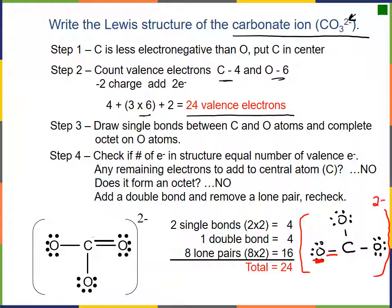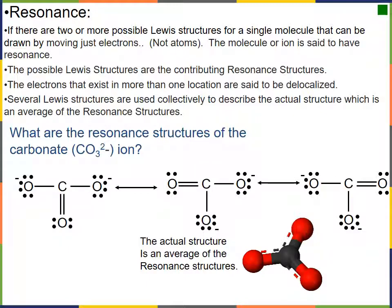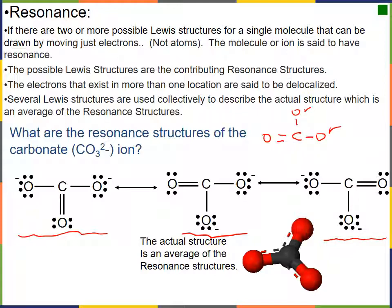We put the 2− charge on the outside and we're done. But looking at it, we realize we could put that double bond on a different oxygen. If we started with the double bond here, we could equally draw a structure with the double bond on this oxygen or that oxygen. Drawing them all out, we have three possibilities for where to place the double bond — one on each of the three oxygens.